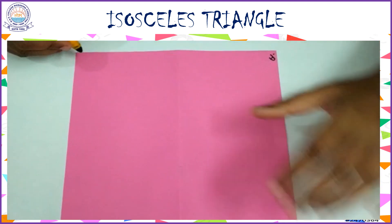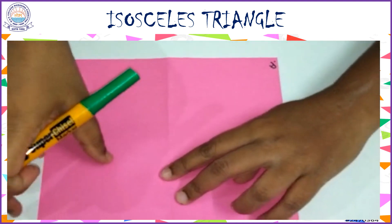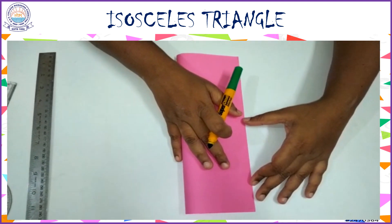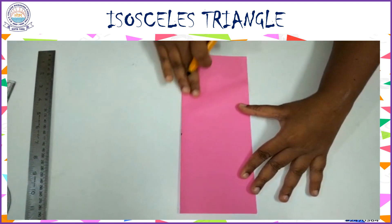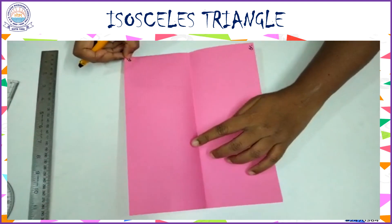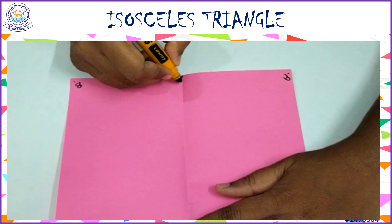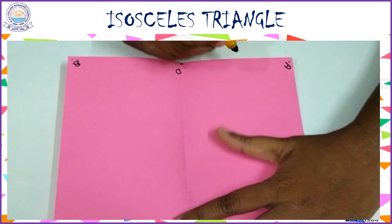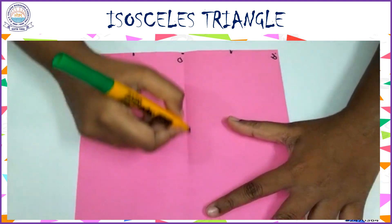Now mark two points A and B on the shorter side of the rectangle. Fold the paper in the middle such that the longer sides meet each other. Now open the folding and mark any point on this line — name it D. This point D divides the line AB equally.